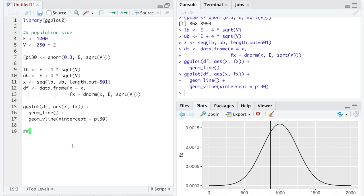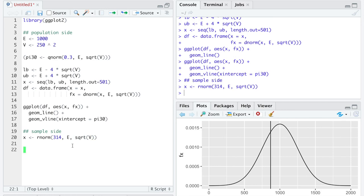If, on the other hand, we wanted to consider the sample side of things such that all we had was a vector of randomly generated normal data, let's say 314 observations with a mean of e and a standard deviation of 250,